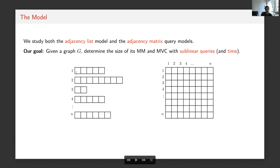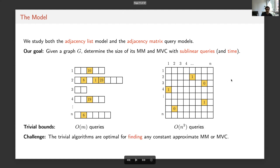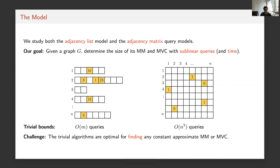A quick reminder: in the adjacency list model, for every vertex we have a list of its neighbors. In the adjacency matrix model, every entry determines whether two vertices are adjacent — it's a 0-1 matrix. There are trivial bounds for both models. In the adjacency matrix model, we can query every entry in O(n²) time, learn the whole graph, and estimate matching or vertex cover size. In the adjacency list model, we can use O(m) queries, since m bounds the total list entries.